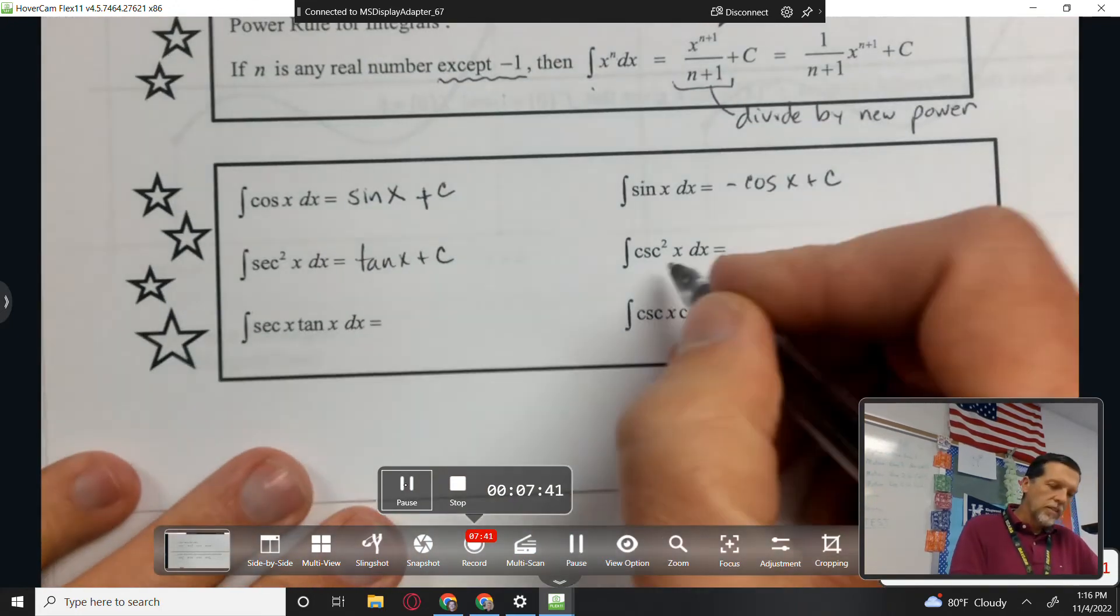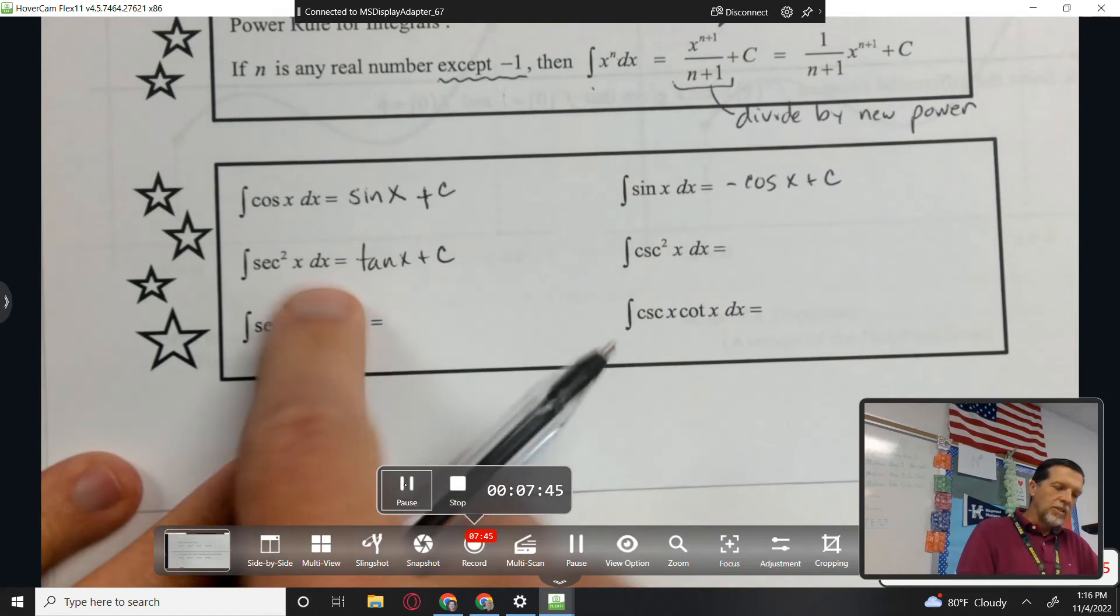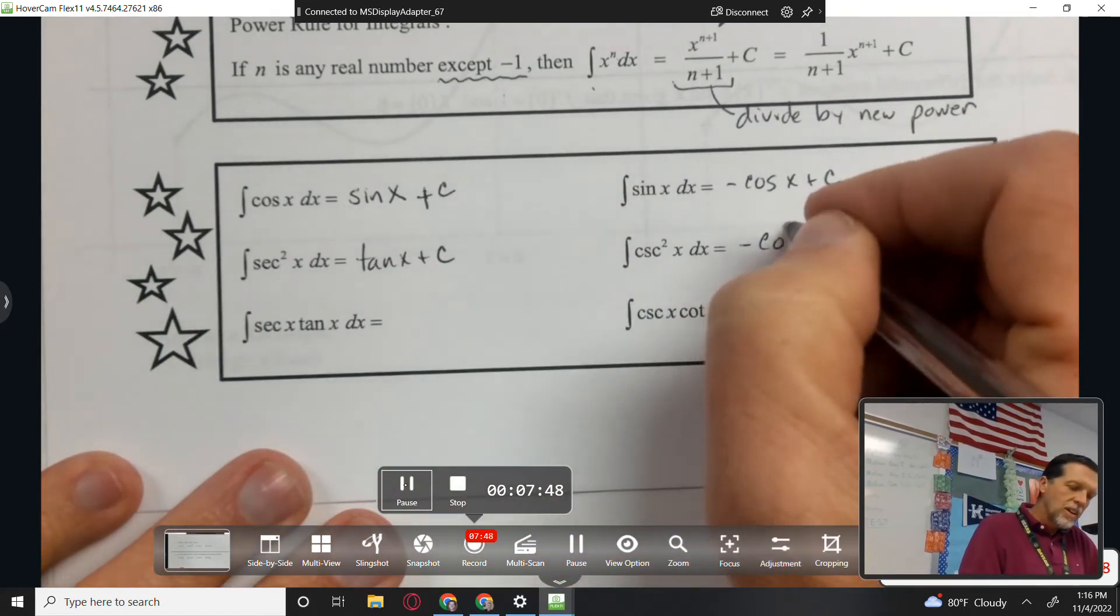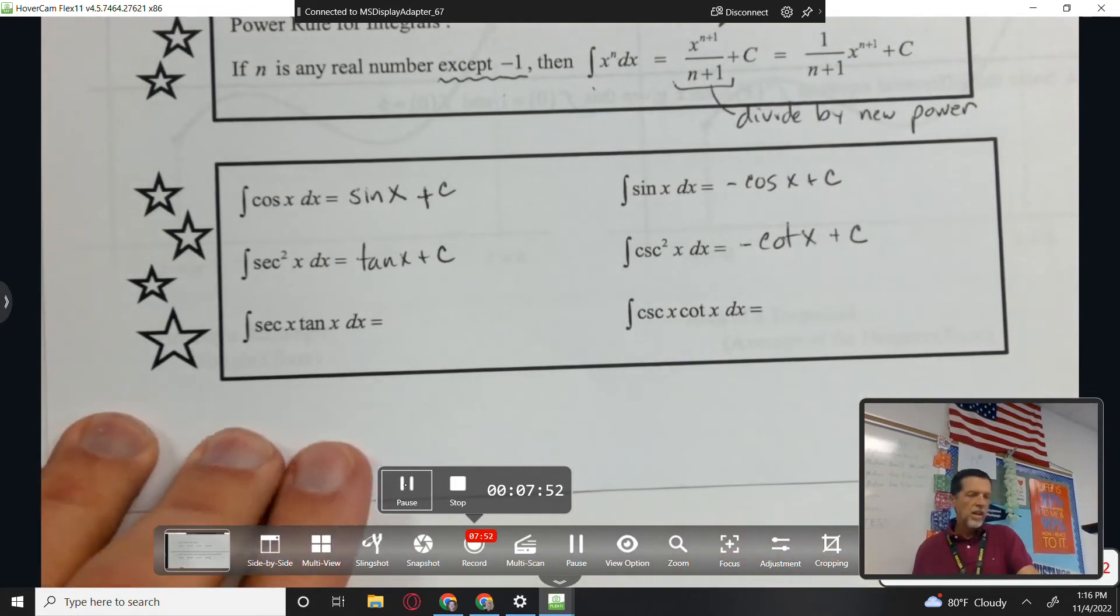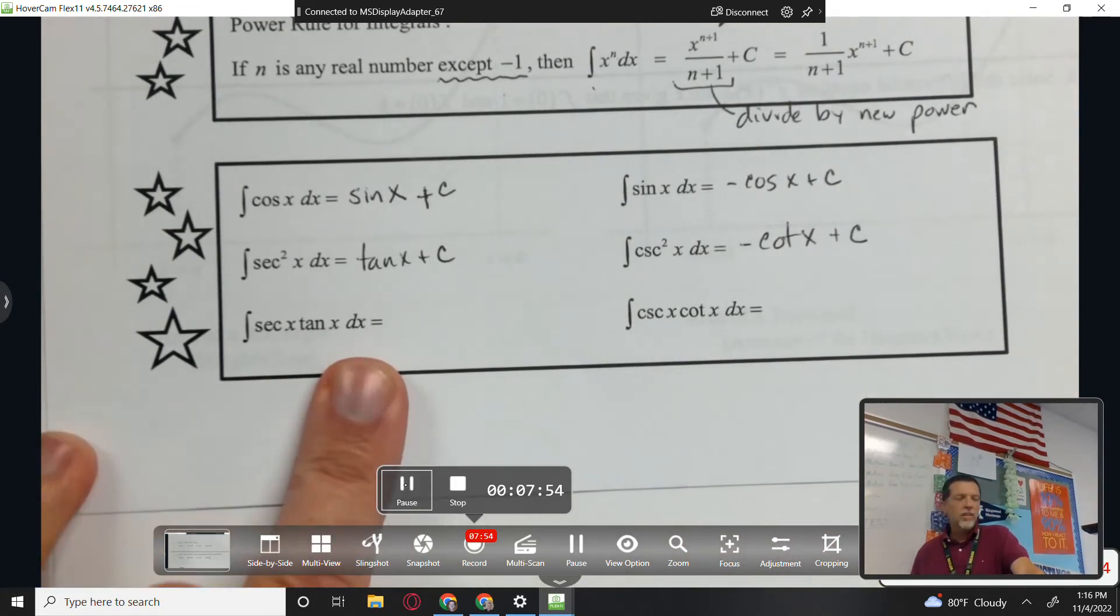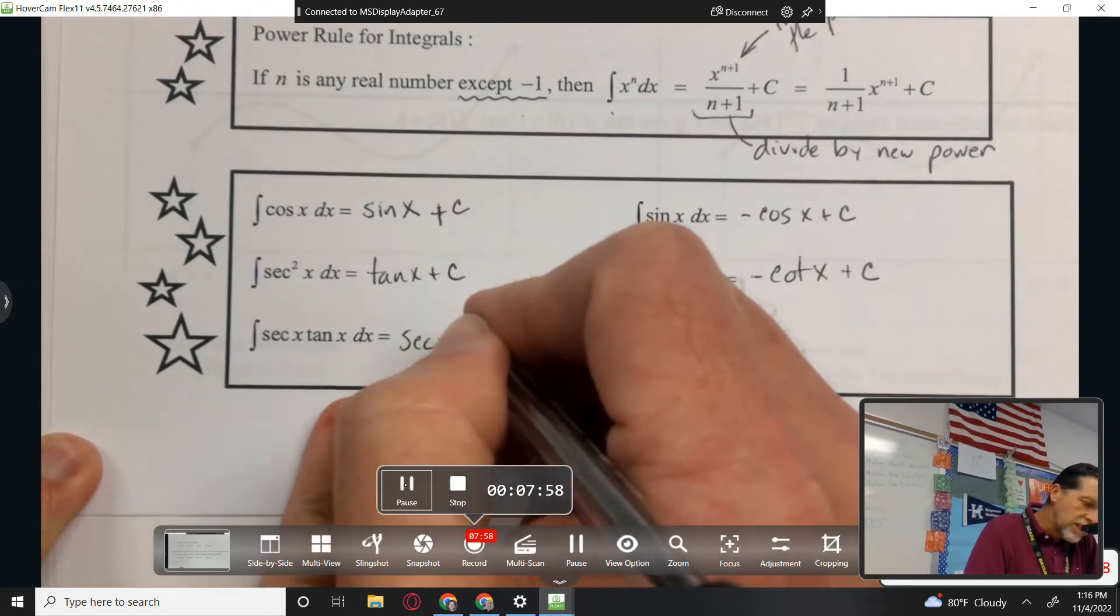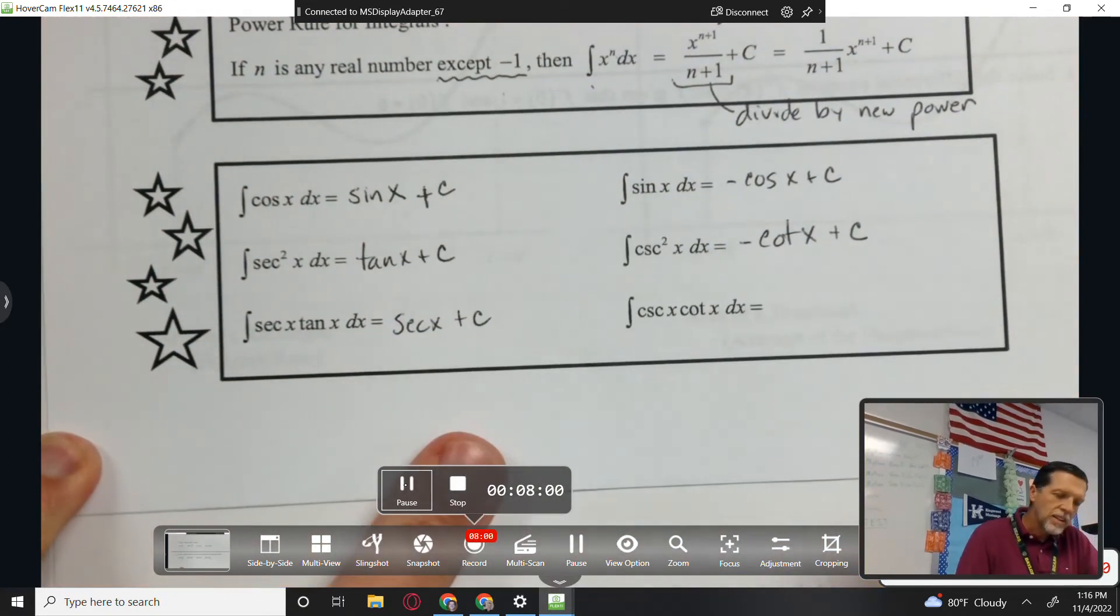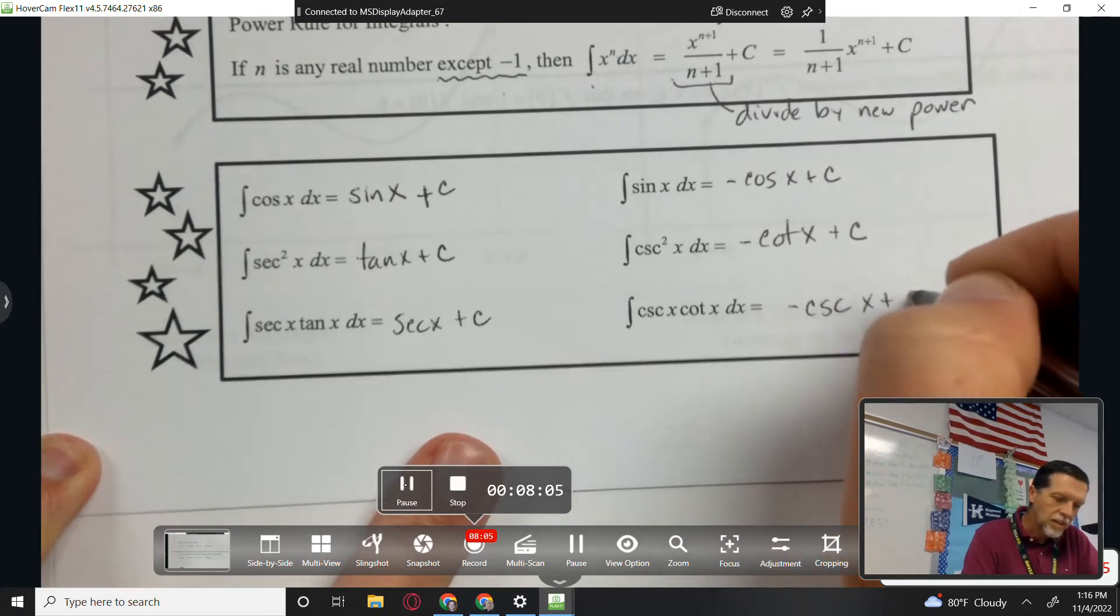Who has a derivative of secant squared? Tangent x plus c. Derivative of cosecant squared? Negative cotangent. Yeah, that one's a little bit trickier, but we've got tangent sitting right there. So negative cotangent plus c. Antiderivative of secant tangent? Secant x plus c. And cosecant cotangent is negative cosecant x plus c.